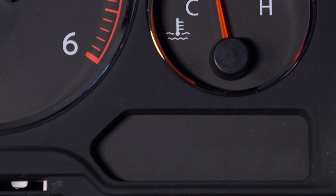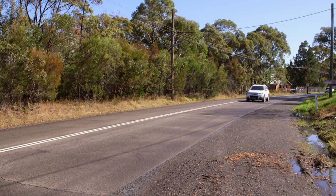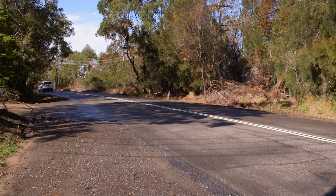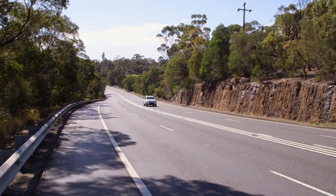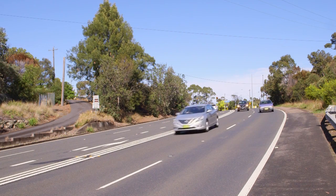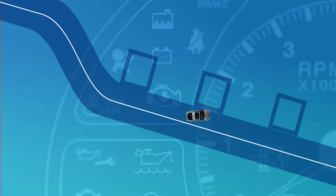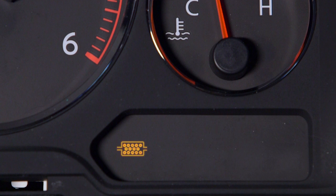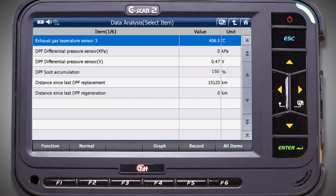Dynamic regeneration is indicated when the DPF light illuminates on the instrument cluster. The vehicle must keep going to complete the regeneration until the light goes out. If the dynamic regeneration is interrupted by the engine being stopped, it will be re-initiated on the next engine run cycle. If the dynamic regeneration is continually interrupted due to a number of short trips, the DPF light will start to flash, indicating that a service regeneration should be performed.